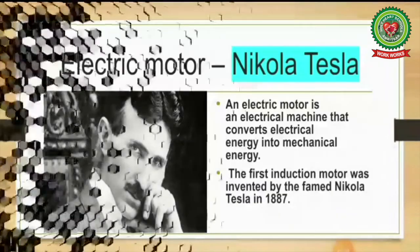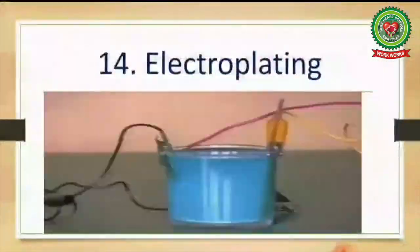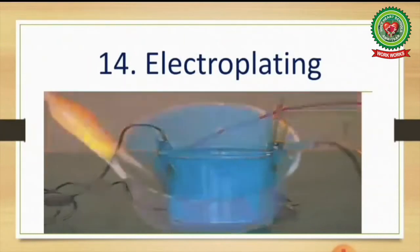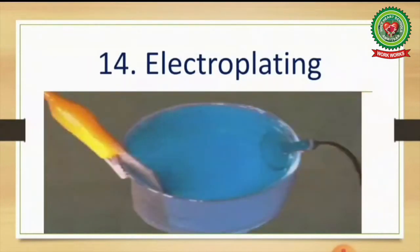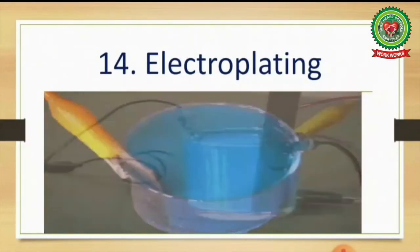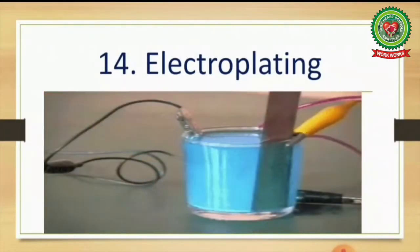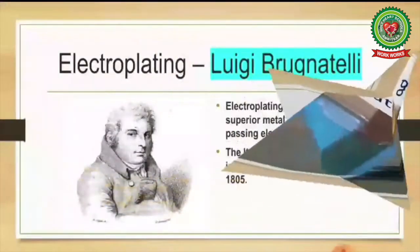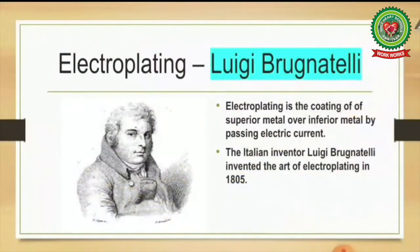The next invention is electroplating. Electroplating is the coating of a superior metal over an inferior metal by passing electric current. The Italian inventor Luigi Brugnatelli invented the art of electroplating in 1805.